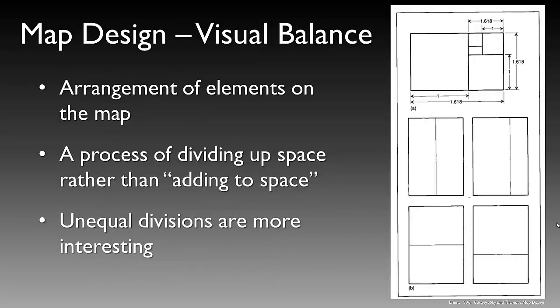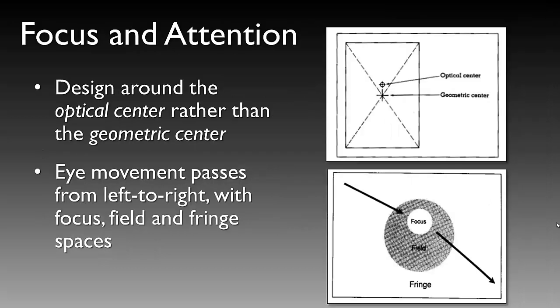Visual balance is a critical component of map design. Arranging the elements on the map is an important process that helps divide up the space so the user can better understand the main topic quickly. The user generally focuses attention not at the geometric center but slightly above it, so you want to design around the optical center. Eye movement passes from left to right, with focus, field, and fringe spaces needing to be taken into account.